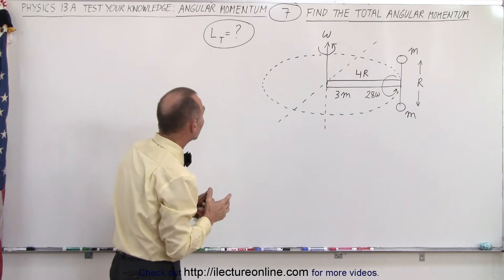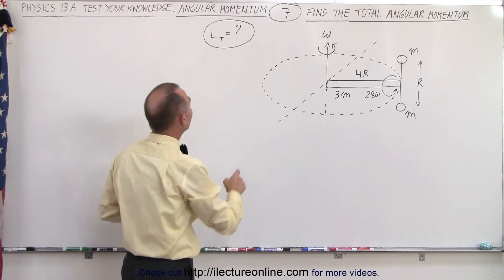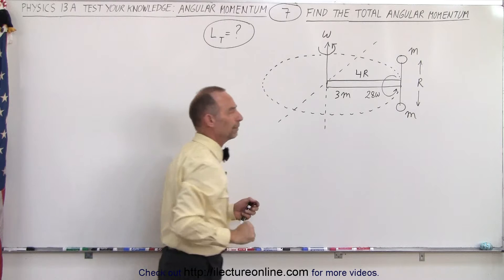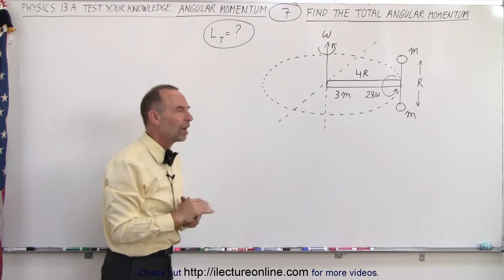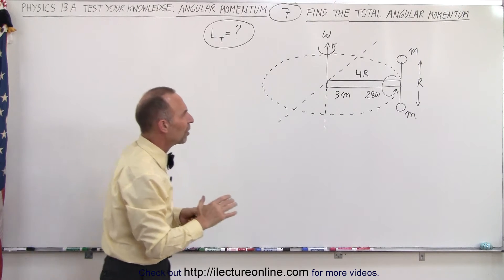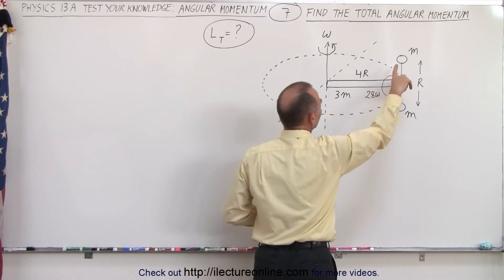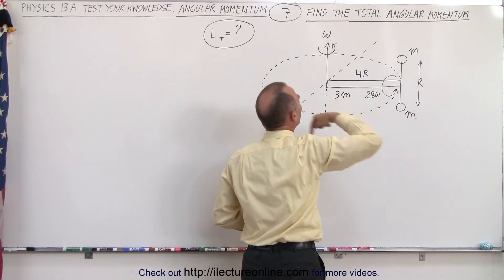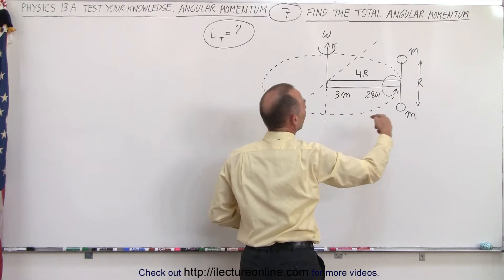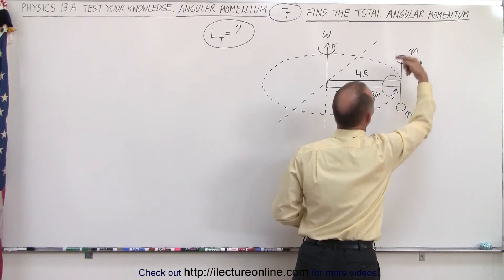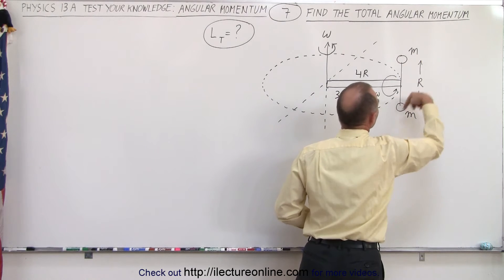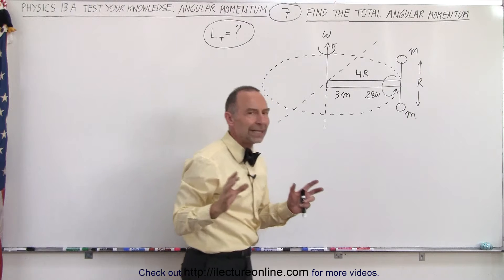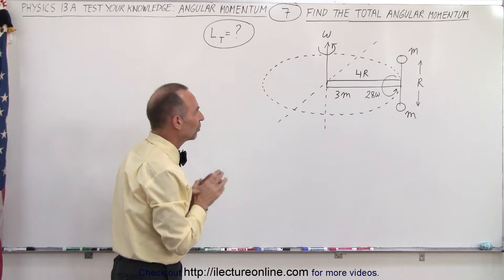What they're asking us to do is to find the total angular momentum of the whole thing. So how do we do that? Well, first of all we have the bar plus the two masses rotating at omega around the vertical axis. Then we have the two masses rotating about the edge. So we need to add all those angular momenta together.